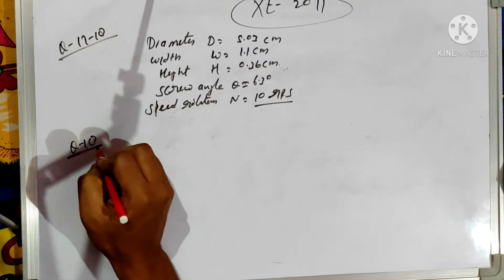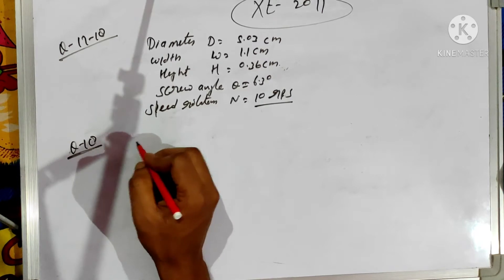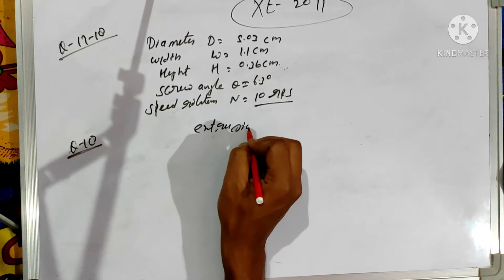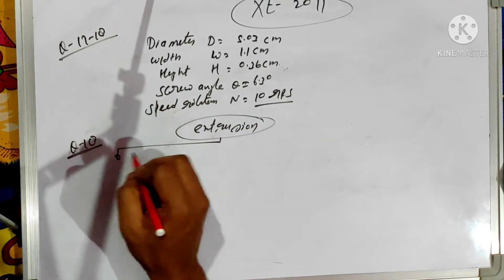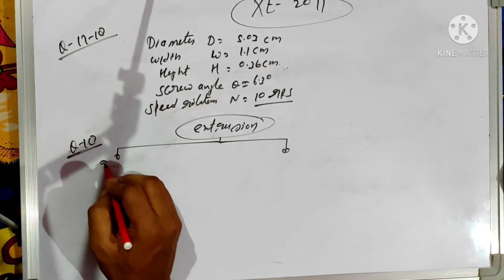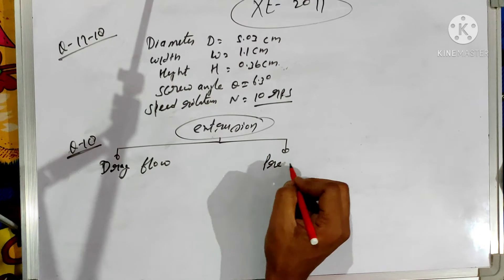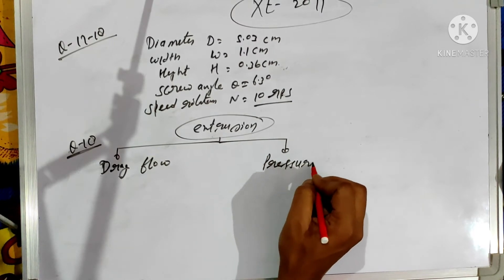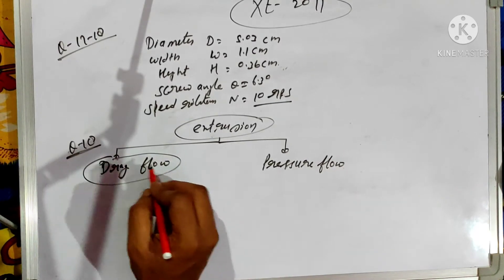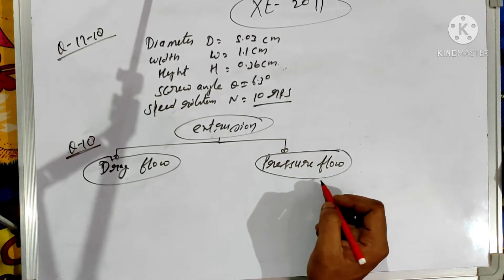In question number 18, in an extruder there are two types of flow. One is drag flow and second is pressure flow. The drag flow arises due to the rotation of the screw, while the pressure flow arises due to the screen pack and breaker plate.